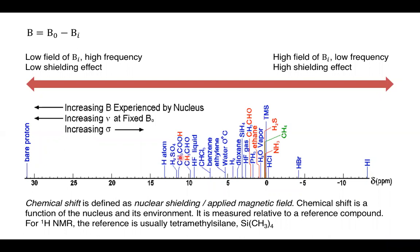Carboxylic acids and alcohols tend to appear at higher chemical shift values — they are less shielded and what we call more acidic protons, meaning more reactive. As we go from small to high numbers, we see a reduction in shielding. The chemical shift is a function of the nucleus and its environment — not only the nucleus being measured but also surrounding nuclei. It is measured relative to a reference component; for proton NMR the reference is usually tetramethylsilane.